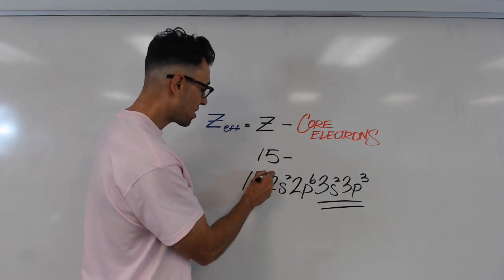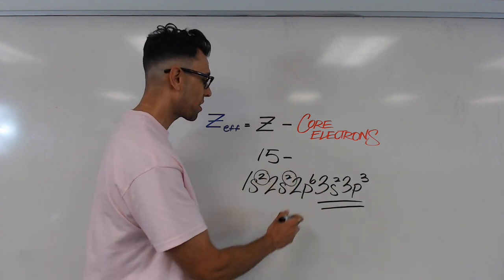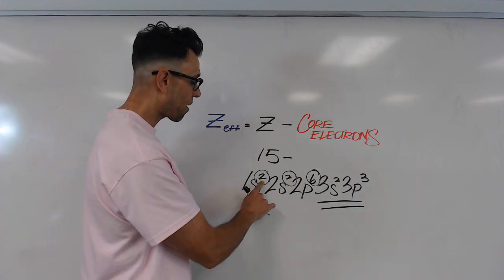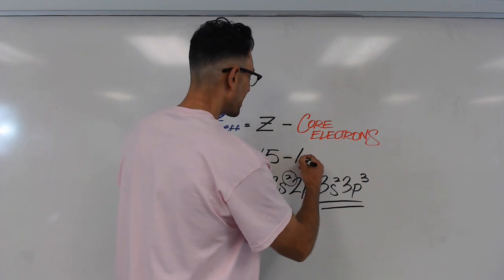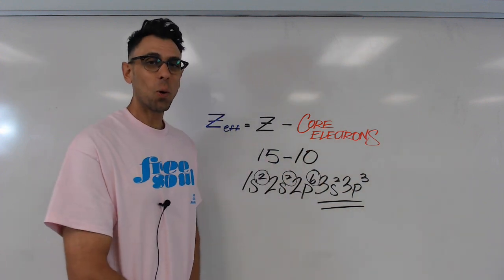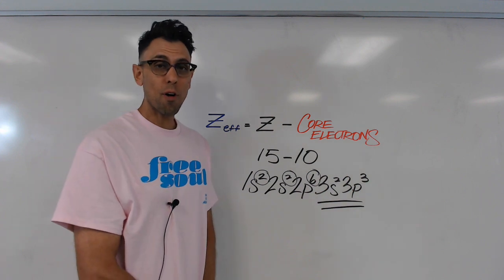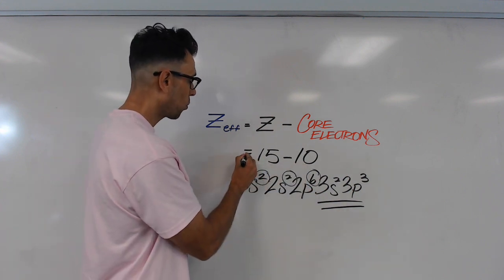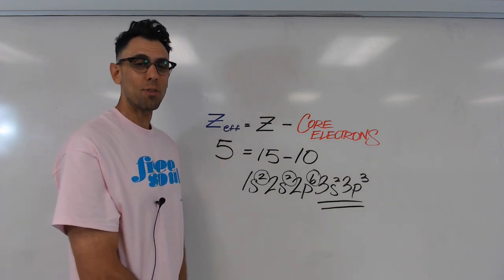So these are core electrons, and these two electrons are core electrons, and so are these six. So in total, I have 2, 4, plus 6, equals 10 core electrons. So my effective nuclear charge for phosphorus is 15 minus 10, which equals 5. The Z-eff of phosphorus is 5.